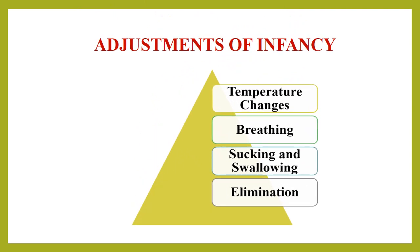Infants must make four major adjustments before they can resume their developmental progress: temperature changes, breathing, sucking and swallowing, and elimination. There is a constant temperature of 100 degrees Fahrenheit in the uterine sac, while temperatures in the hospital or home may vary from 60 to 70 degrees Fahrenheit. Until the baby is in the mother's womb, the baby breathes, receives food, and eliminates waste products through the umbilical cord. But when the fetus is out of the mother's womb, these actions must be done by the infant voluntarily.